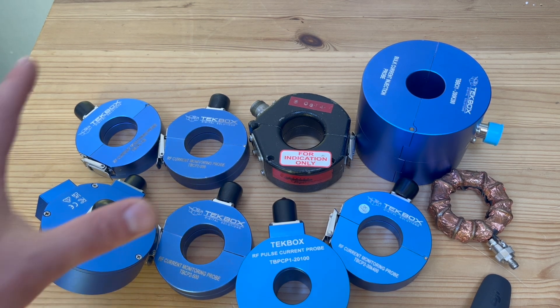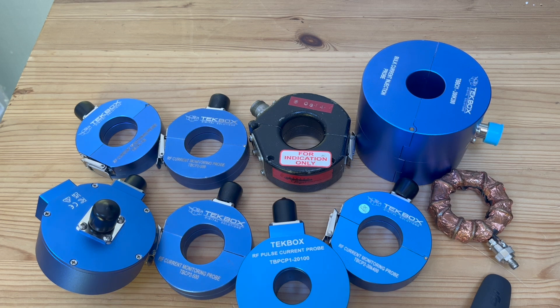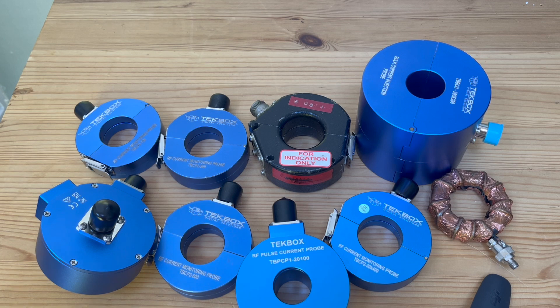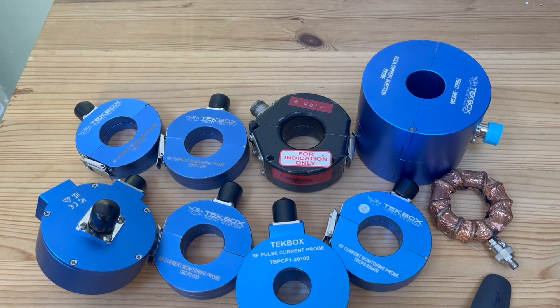As you can see here, we have so many current probes laid on the table. If you ask any EMC troubleshooter or test engineer, if you can only have one passive device for your EMC work, which component or device would you choose? I bet 99% of the time they will say an RF current probe.